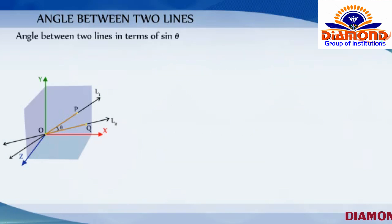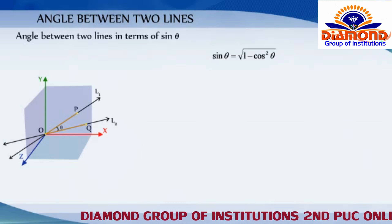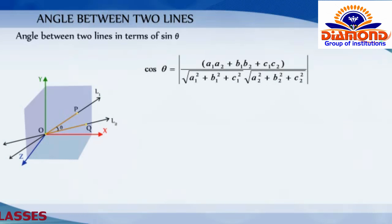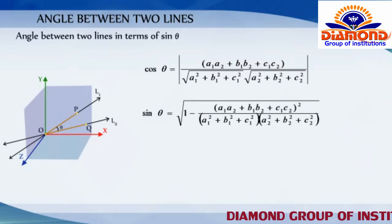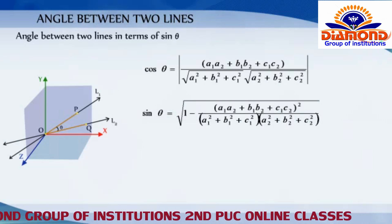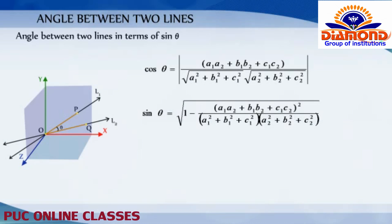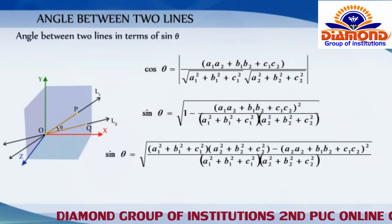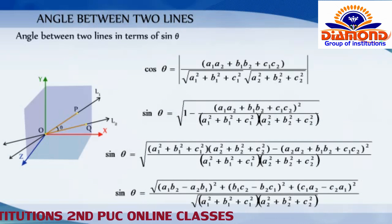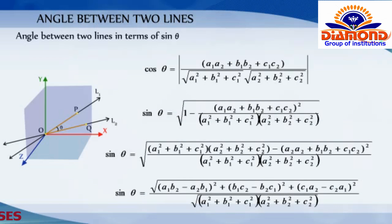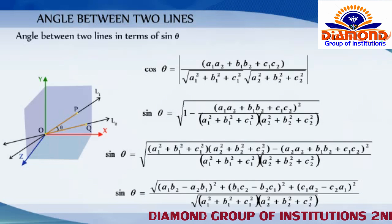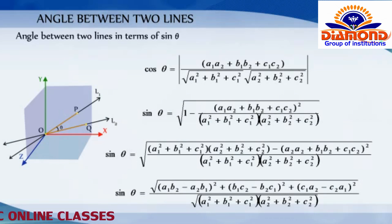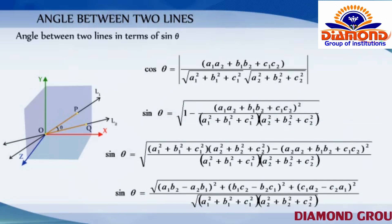Angle between two straight lines in terms of sin theta. We know sin theta equals the square root of (1 minus cos² theta). Substituting the value of cos theta, we get sin theta equals the square root of [1 minus (A1·A2 plus B1·B2 plus C1·C2)² divided by (A1² plus B1² plus C1²)(A2² plus B2² plus C2²)]. On simplification, sin theta equals the square root of [(A1·B2 minus A2·B1)² plus (B1·C2 minus B2·C1)² plus (C1·A2 minus C2·A1)²] divided by [√(A1² plus B1² plus C1²) times √(A2² plus B2² plus C2²)].